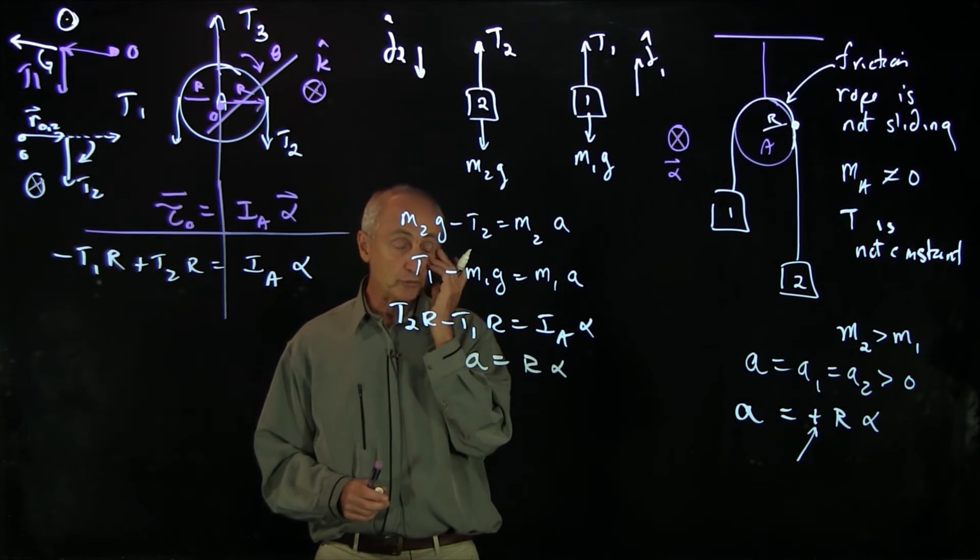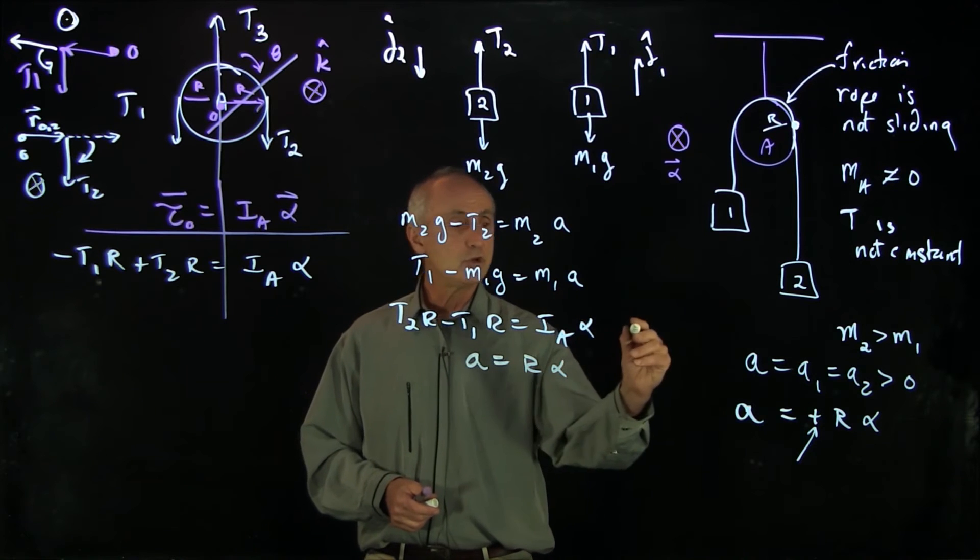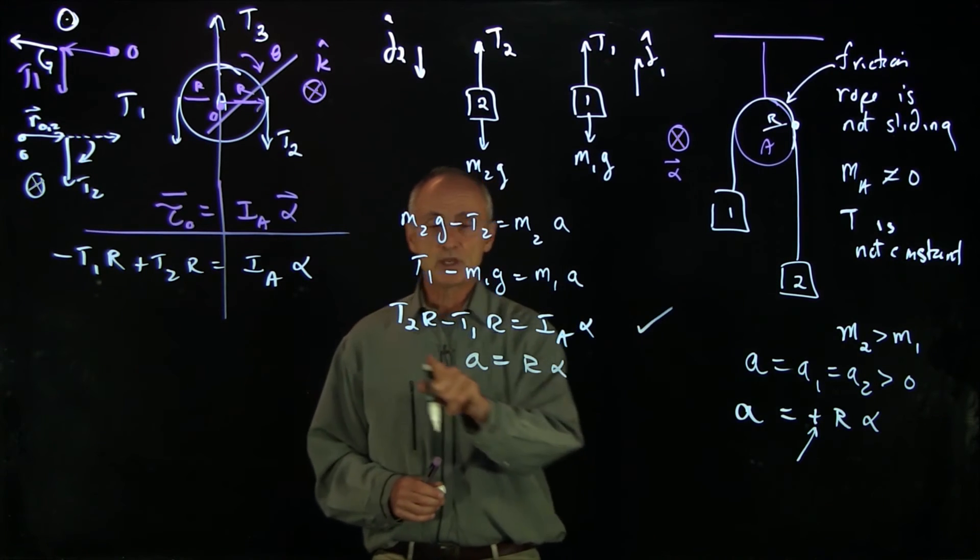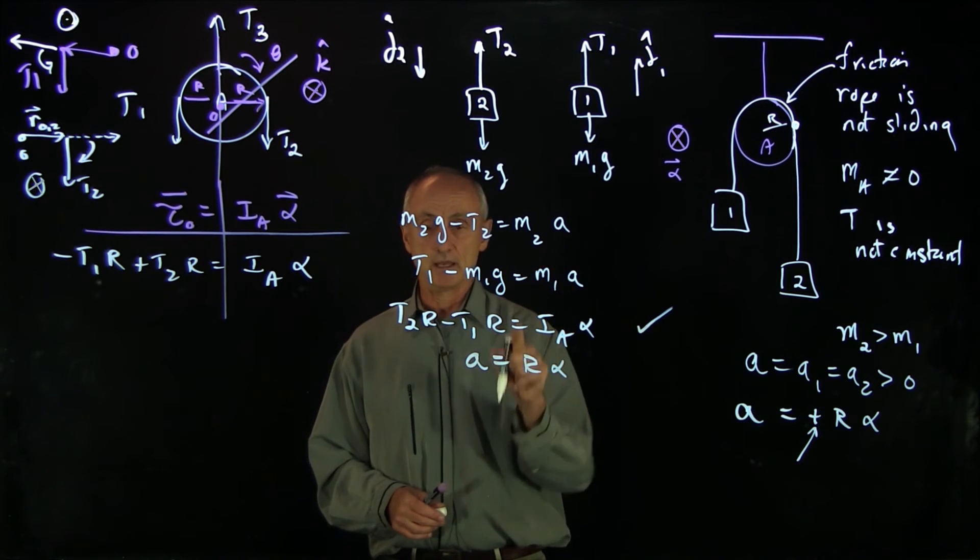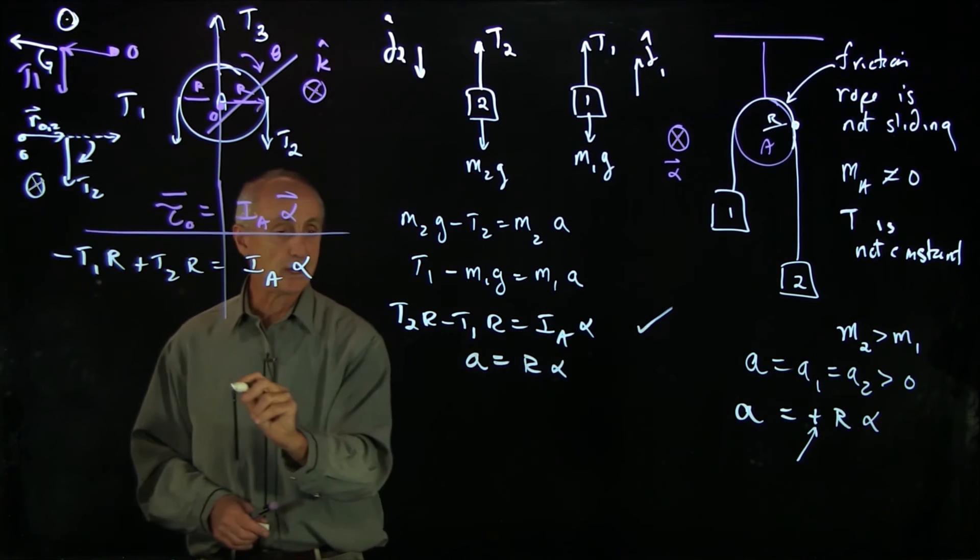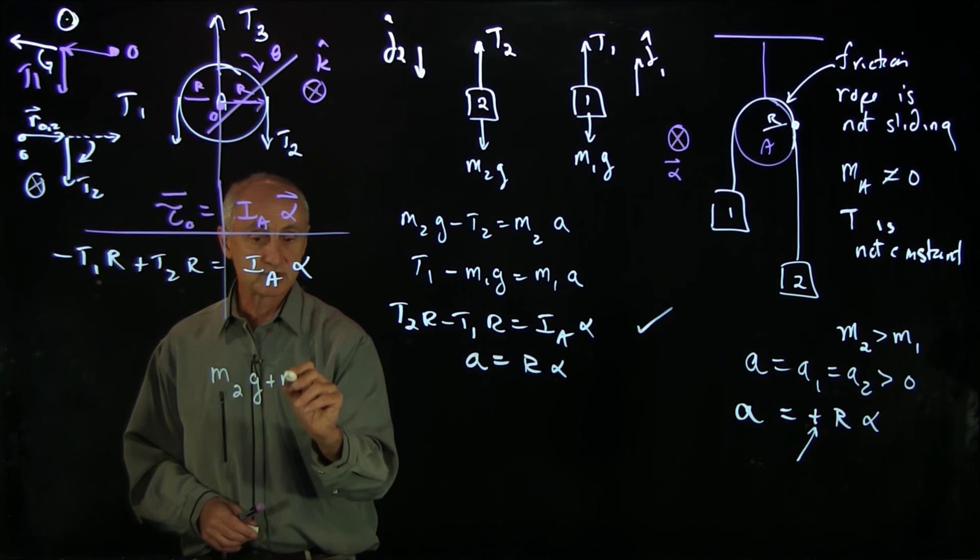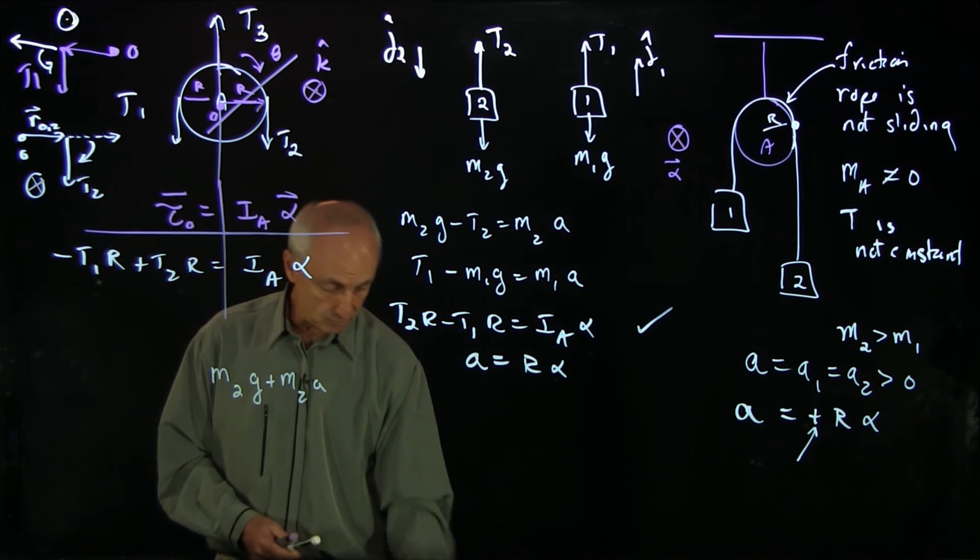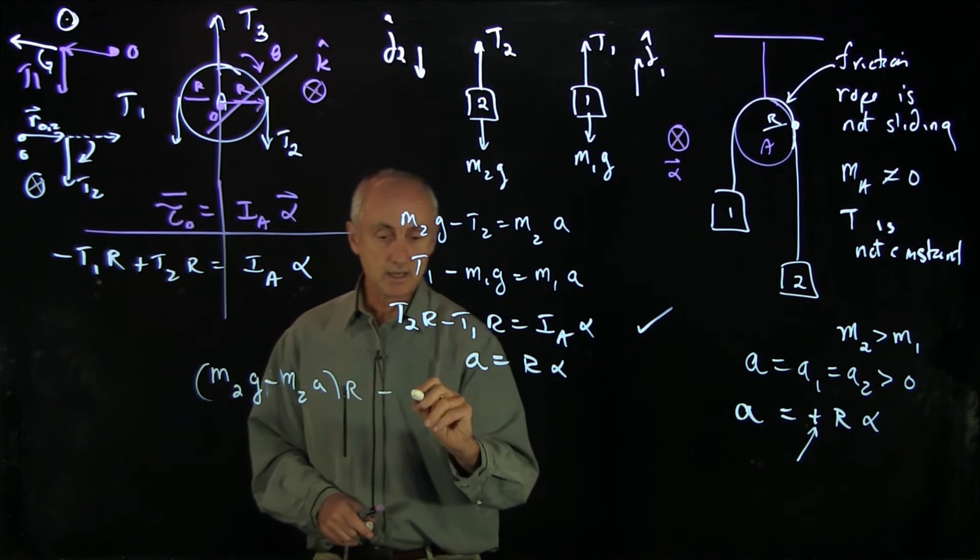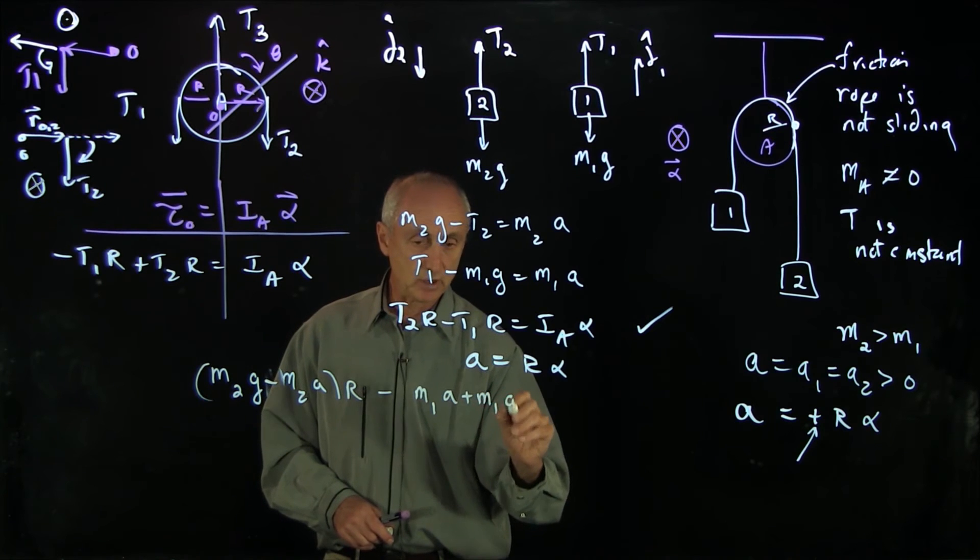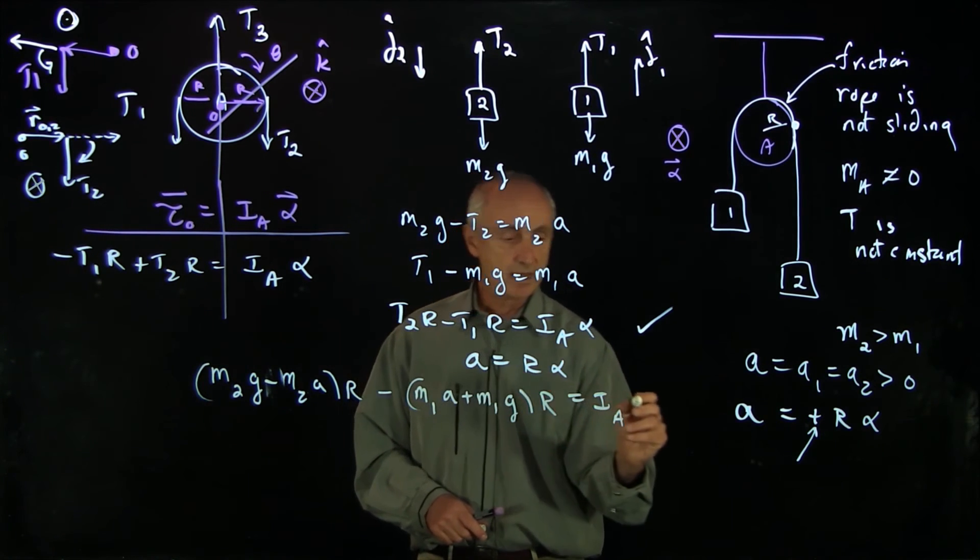I now have four equations and four unknowns. If I want to solve for the acceleration a, then I need a strategy here. What I'll do to find a is I'll use this equation as my backbone. Why did I do that? Because I have the unknowns T2, T1, and alpha. And I have separate equations that relate alpha to a, and T1 to a, and T2 to a. So I can solve for T2 and substitute it in here.